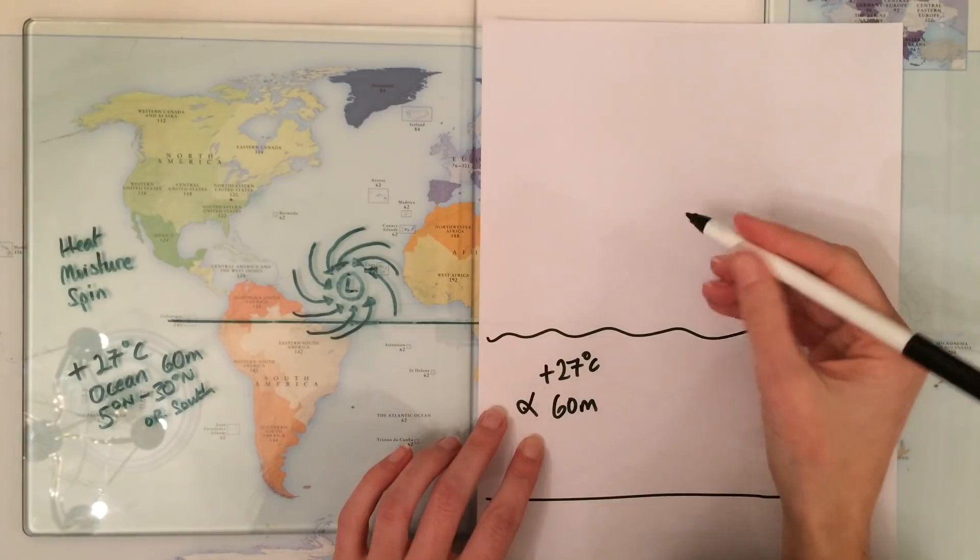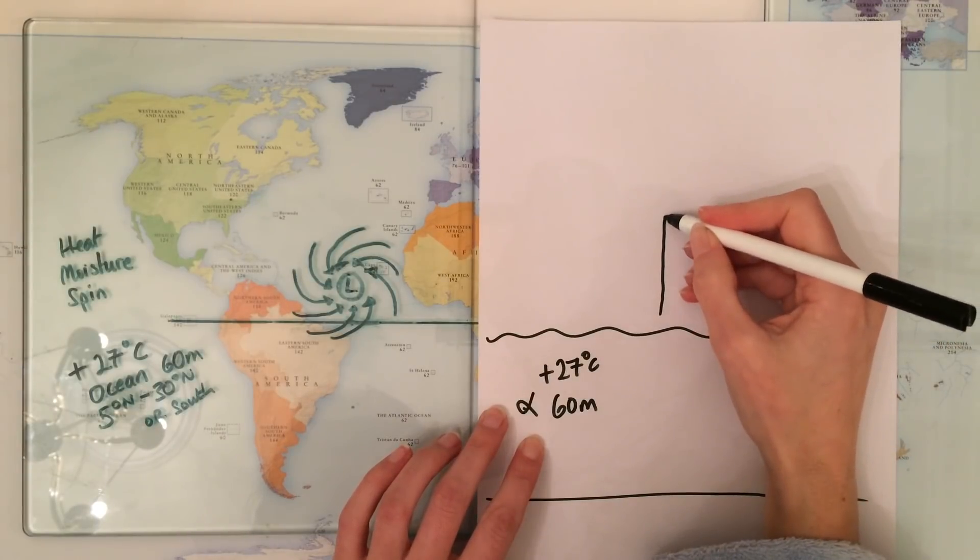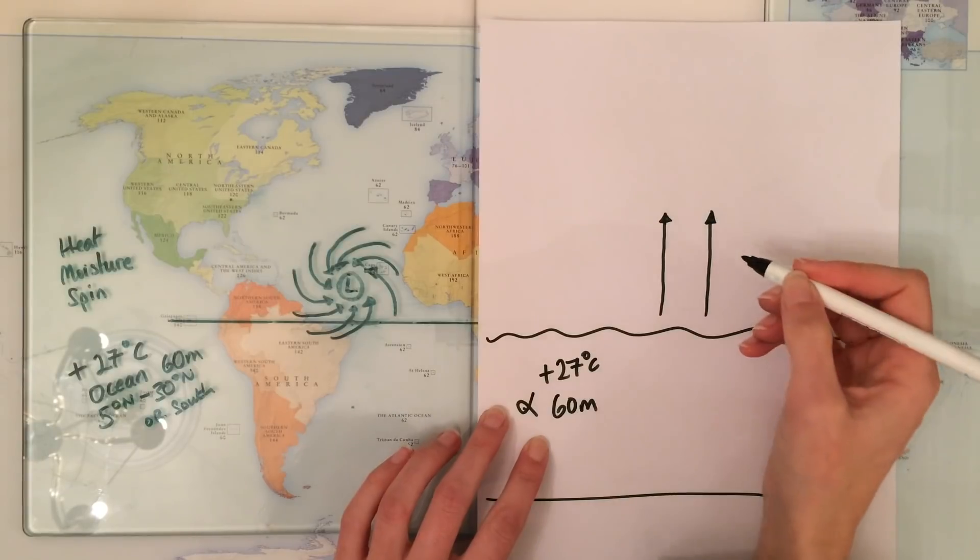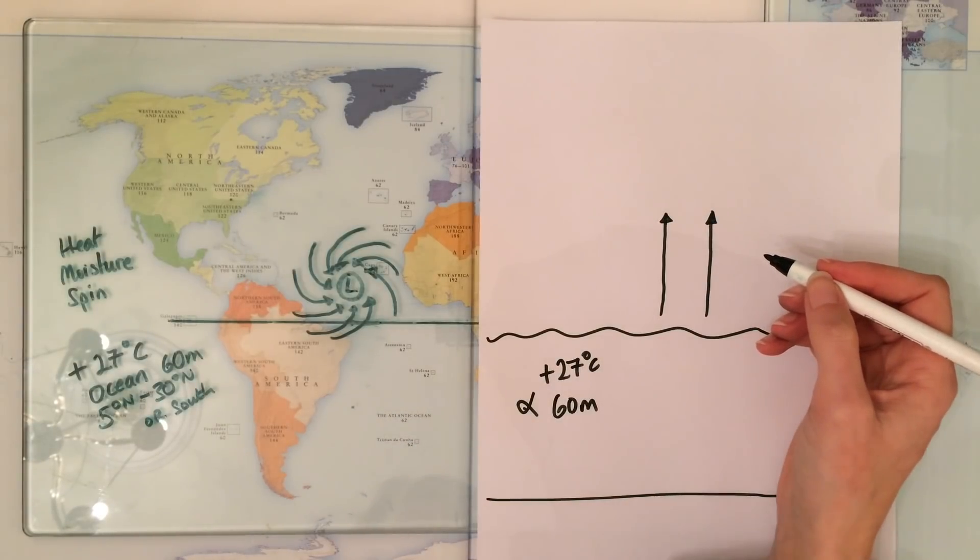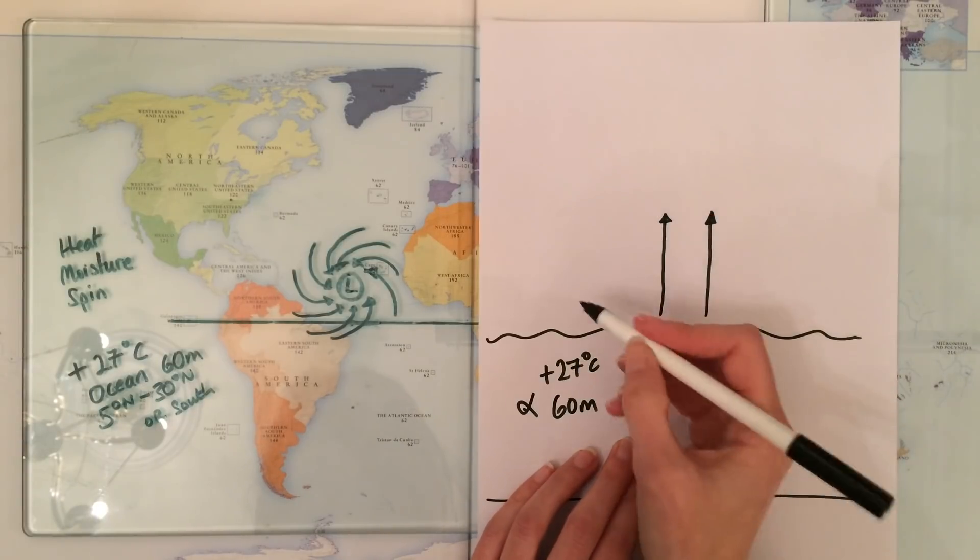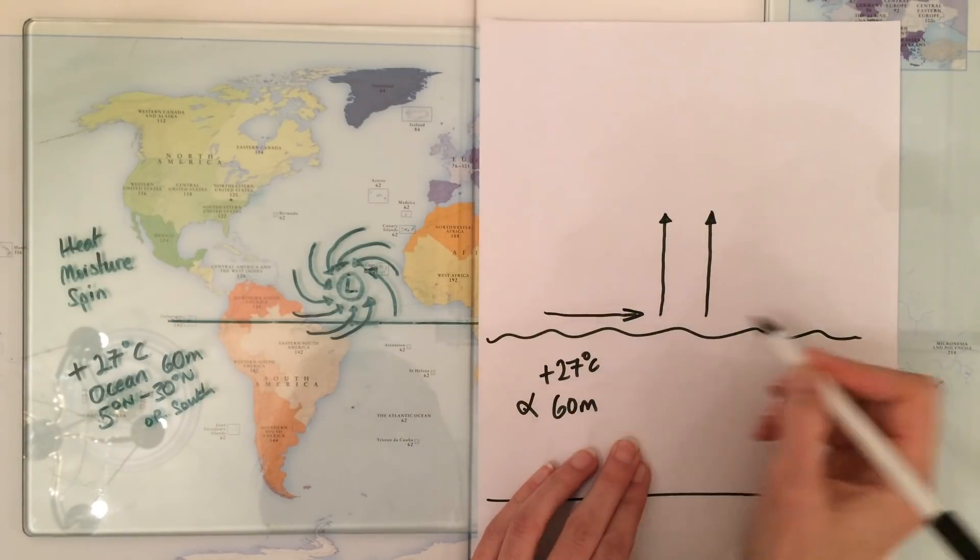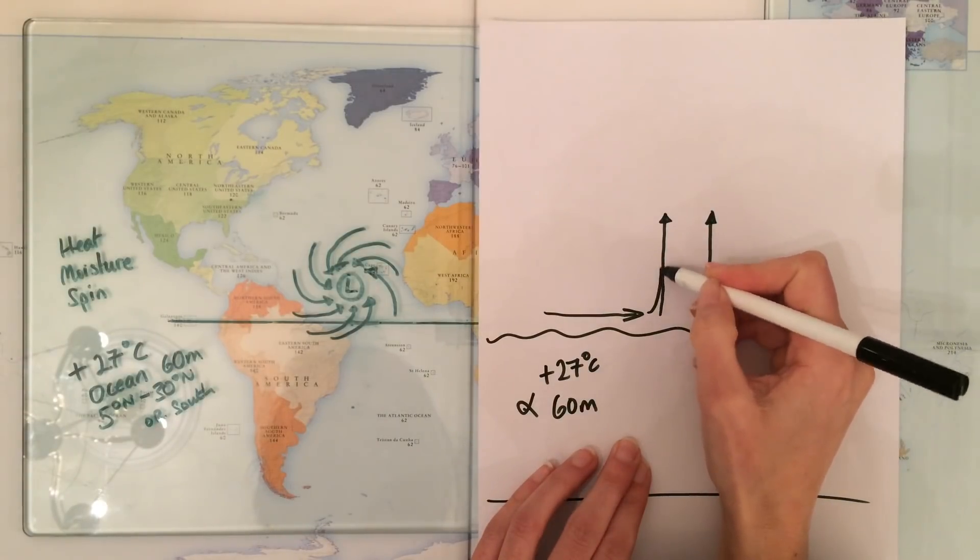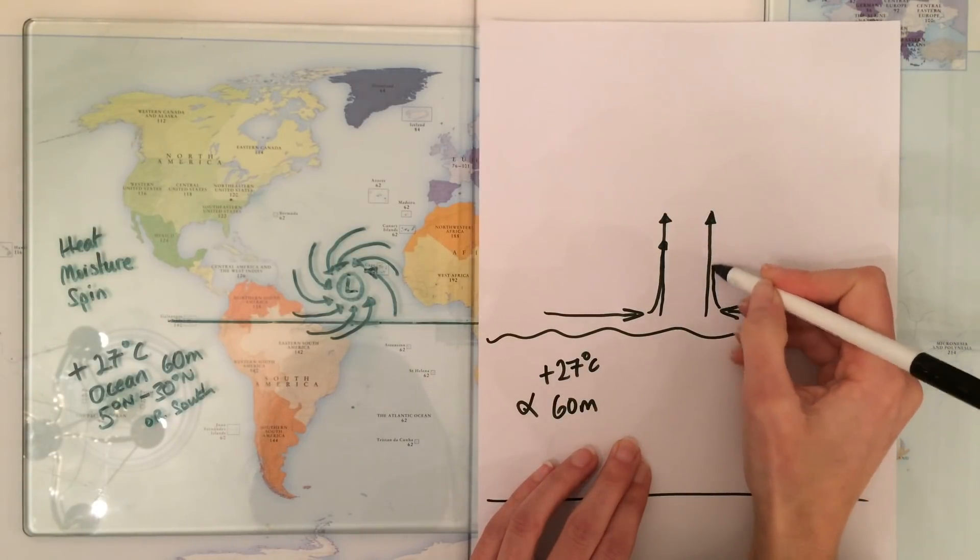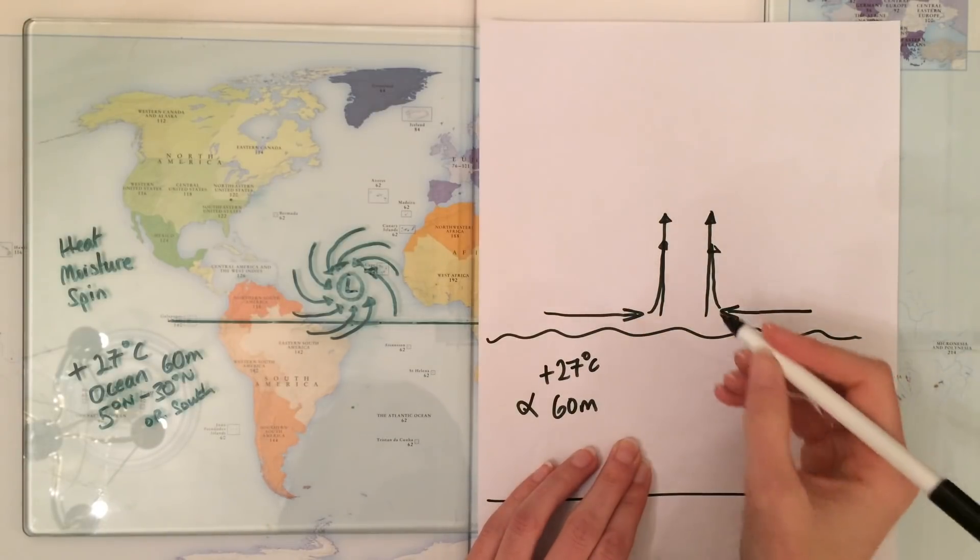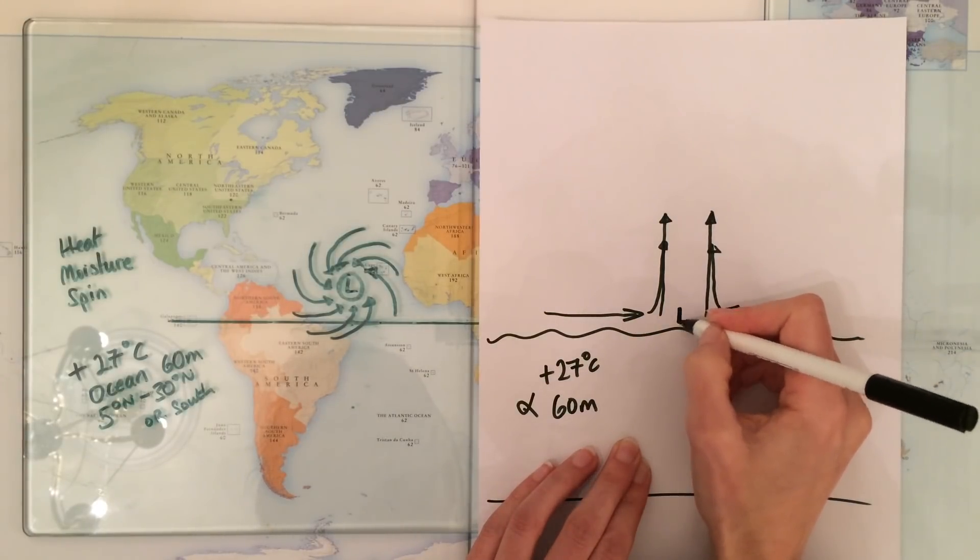It rises rapidly, and the fact that it rises rapidly means that it creates strong winds. As that air rises, more air is sucked in from the surroundings which also rises, and this continually happens. Air rises and sucks more in. This creates low pressure at the surface.